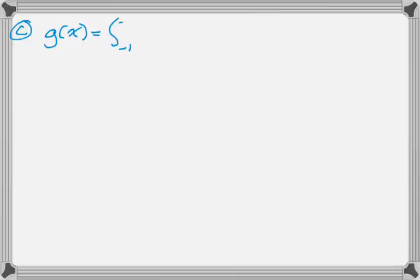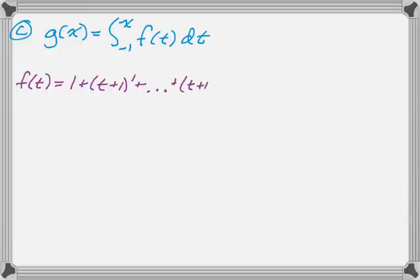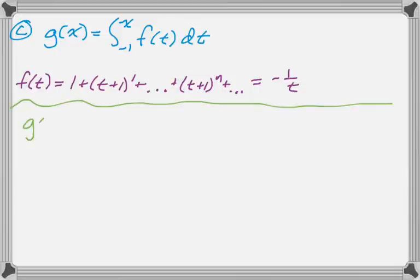So for part C, we have g of x defined as an accumulation function. So it's the integral from negative 1 to x of f of t dt. I'm going to rewrite this so that I have f of t. So replacing every x I see with a t gives me this. So this is the original series. But if you remember, in the previous part, we actually evaluated that and found that it was equal to negative 1 over t on the interval of convergence. But we're within the interval for this. So g of x is actually this integral, which I can do.